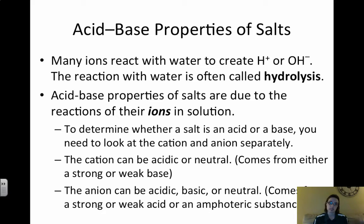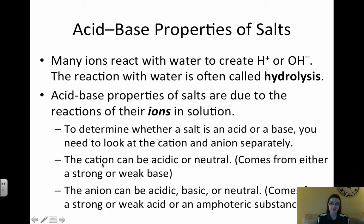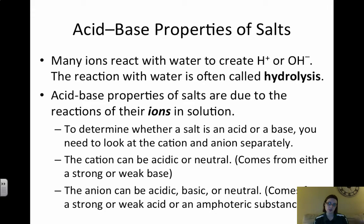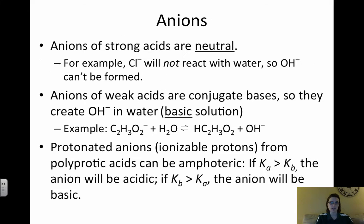The acid-base properties are due to the reactions of the ions in solution. We have to look at the cation and anion separately when determining acidity or basicity. The cation, or positive ion, can be acidic or neutral because it comes from either a strong or a weak base. The anion of the salt can be acidic, basic, or neutral. We have to look at where the ions come from.